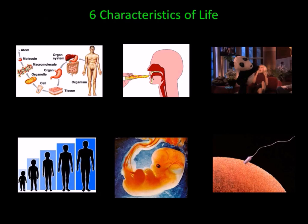We'll discuss what characteristics anatomists believe define life. The first characteristic is organization, which we discussed previously. The second characteristic is metabolism. Metabolism is made up of two different processes: catabolism and anabolism. Catabolism is the breakdown of materials, and anabolism is the building of materials.